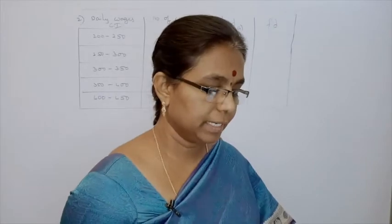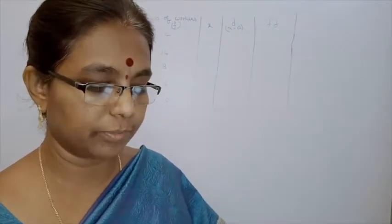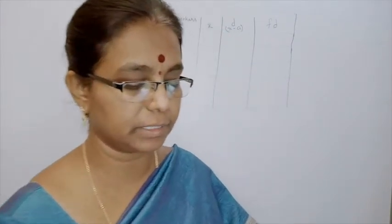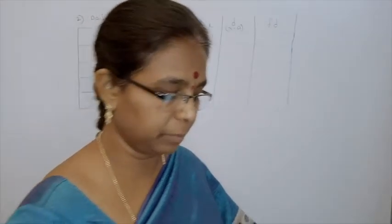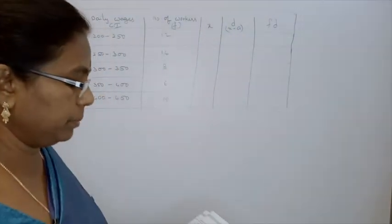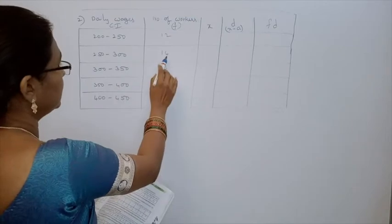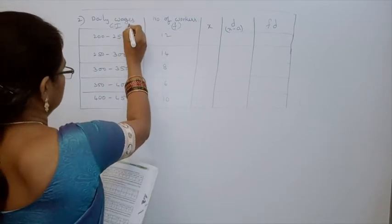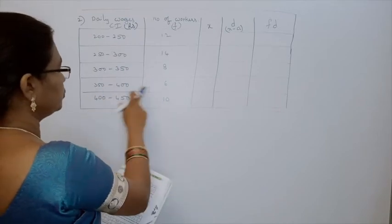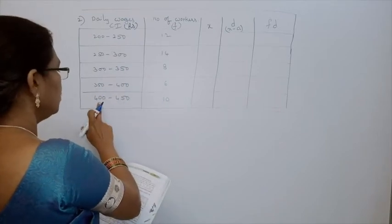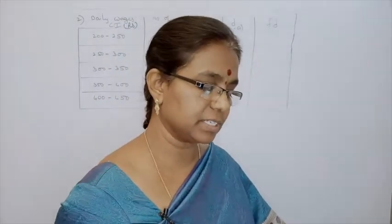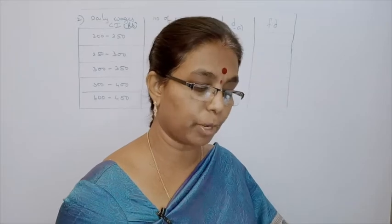Second problem. Consider the following distribution of daily wages of 50 workers of a factory. In one factory, 50 workers are there. Their daily wages are given in the table. Daily wages in rupees: 200 to 250 — 12 members; 250 to 300 — 14 members; 300 to 350 — 8 members; 350 to 400 — 6 members; 400 to 450 — 10 members. Find the mean daily wages of the workers of the factory by using an appropriate method.